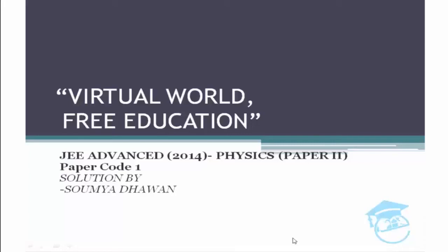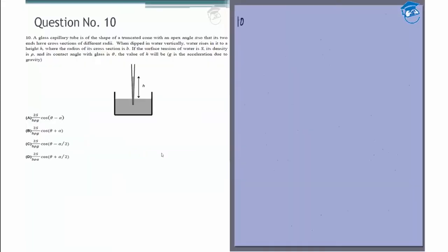Hello everyone and thanks for watching Edipedia World videos. In this video we'll discuss solutions to the questions in Paper 2 of the 2014 JEE Advanced Physics question paper. Question 10: We have a glass capillary tube in the shape of a truncated cone.